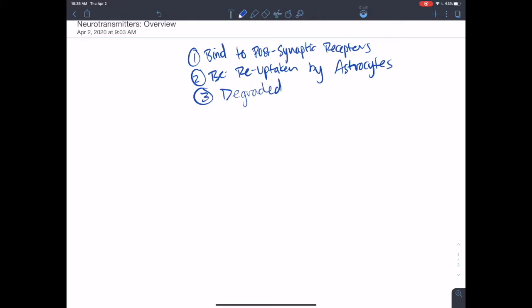And these two processes, reuptake and degradation, kind of go hand in hand. Some neurotransmitters are regulated by reuptake, some are regulated by degradation.